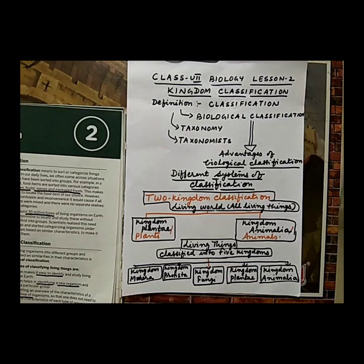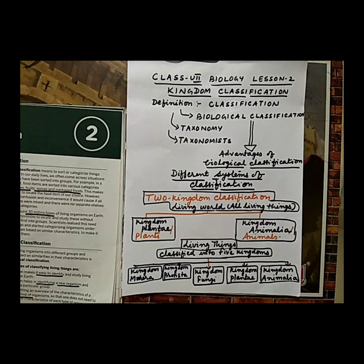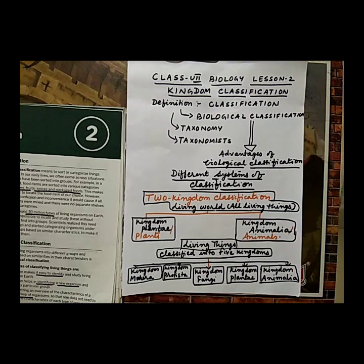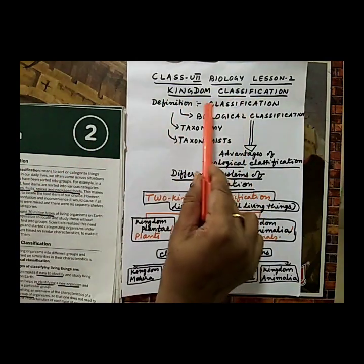Hello students, this is class 7 biology lesson 2: kingdom classification. From this lesson we will learn the meaning of classification, advantages of classifying living things, two kingdom classification, five kingdom classification, general plan of classification, and scientific names of some plants and animals. So for this we will be looking at some definitions.